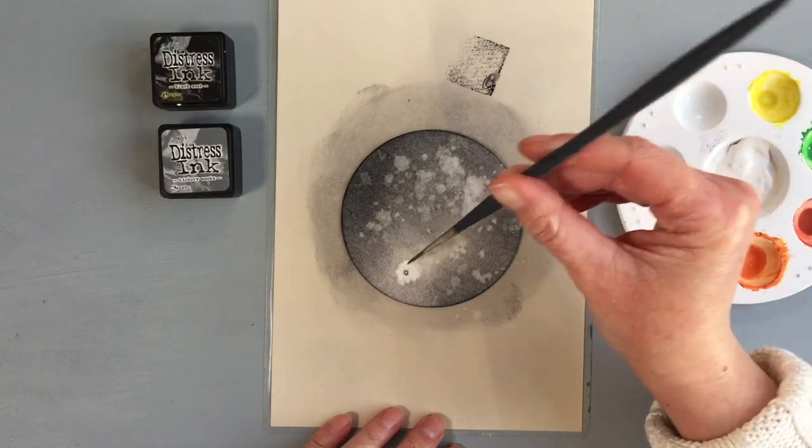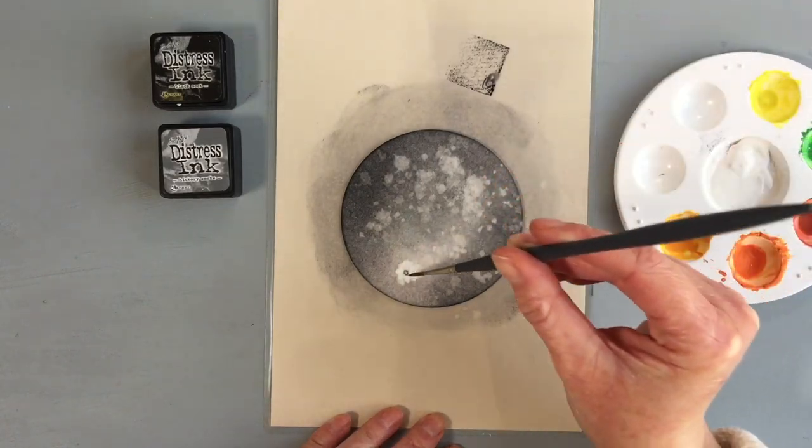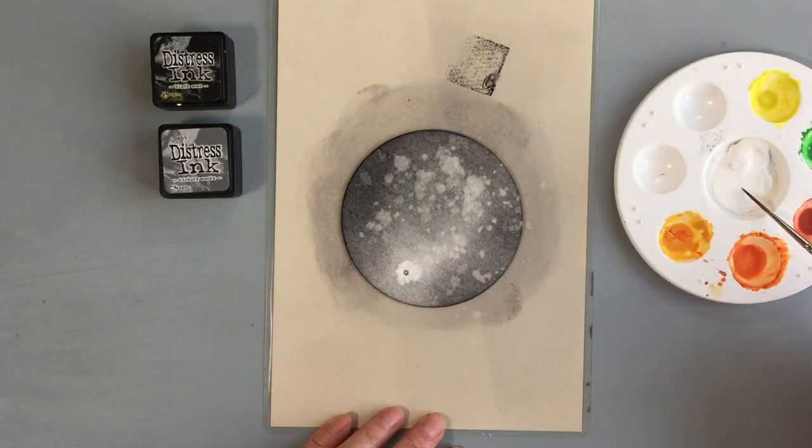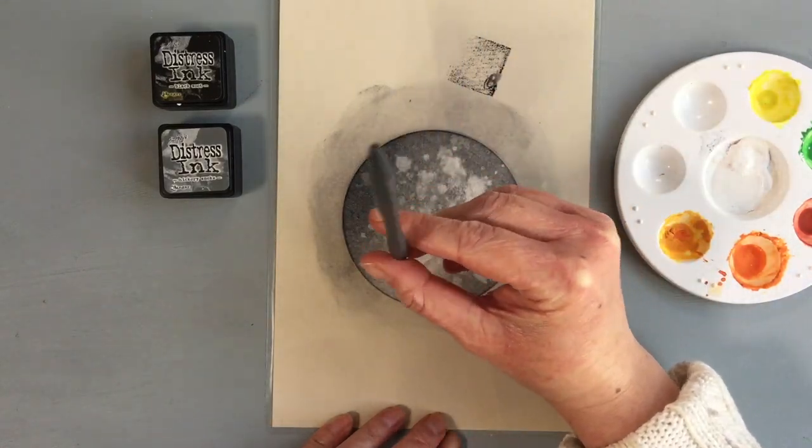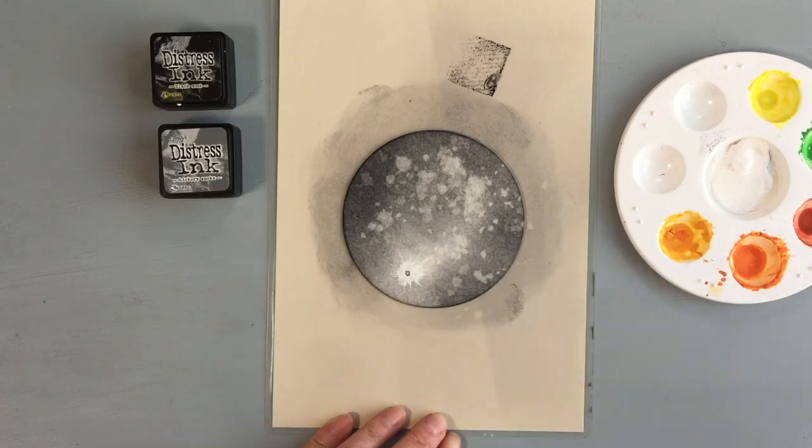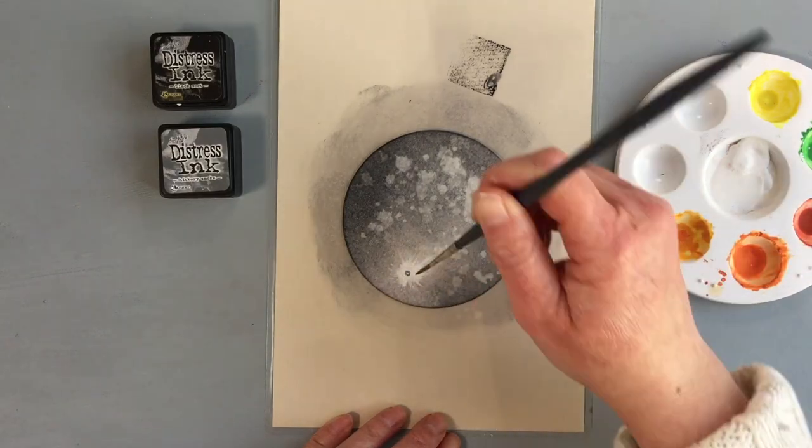For the lines I used a long bristle brush in size one. These brushes are great for long thin lines, although for these lines around the crater I think I would need even smaller brush, maybe something like double zero.